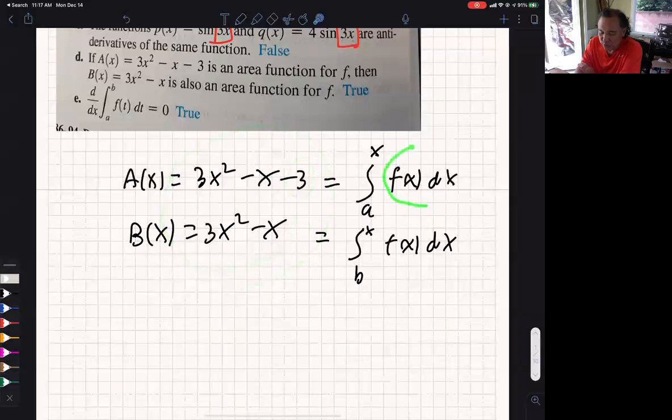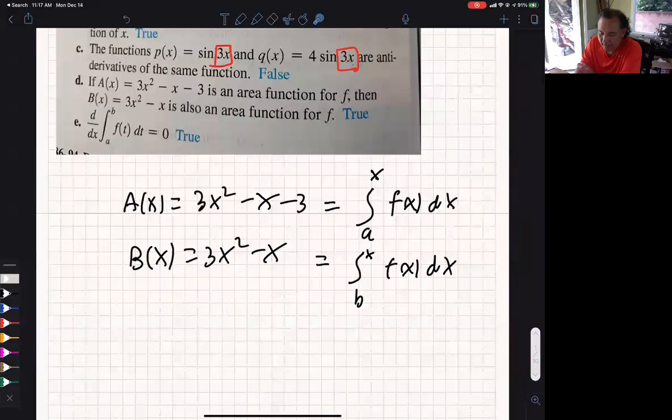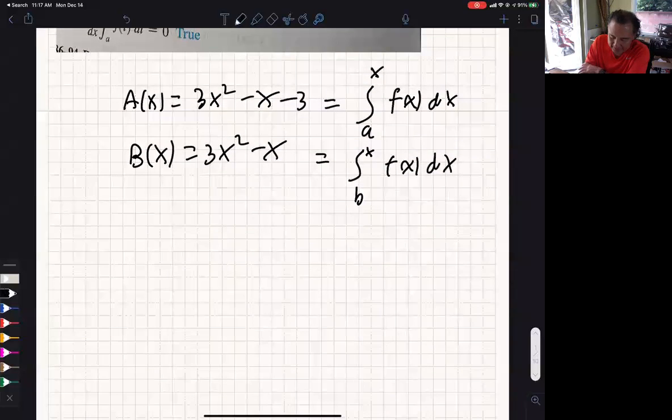Well, when you take the anti-derivative of something, they're going to be pretty much the same thing apart from a constant. And since we started at different values, that's going to give us different constants. I don't know if that makes sense to you. How can I explain? I will explain like this.